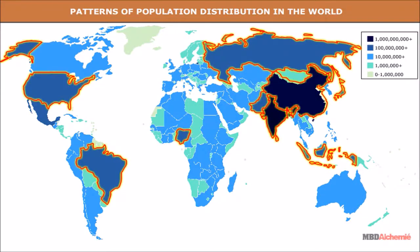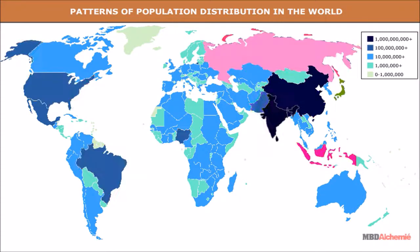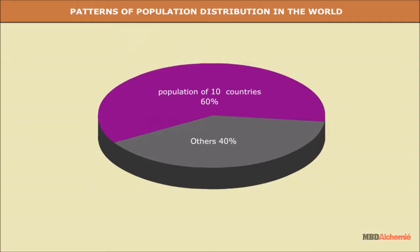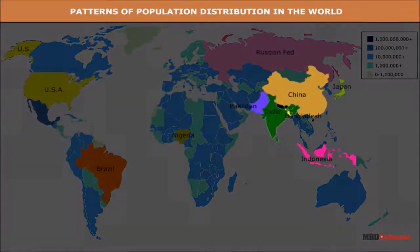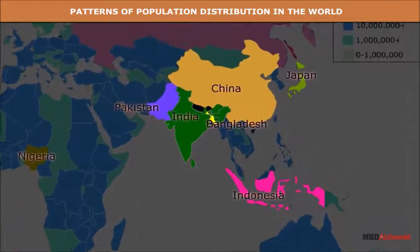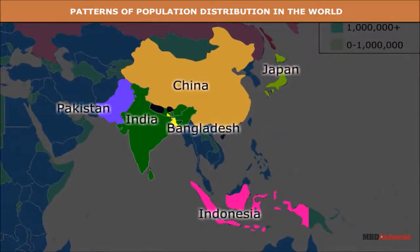The 10 most populous countries of the world contribute about 60% of the world's population. 6 countries out of these 10 countries are located in Asia.